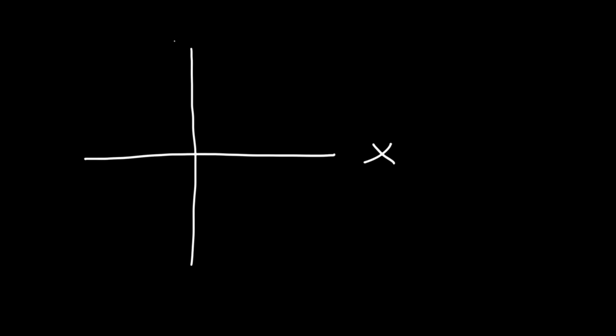Let's say we have a graph with the x-axis and the y-axis. An angle is said to be in its standard position if the vertex is at the origin — that's the common endpoint — and the initial side, or the initial ray, is on the x-axis.